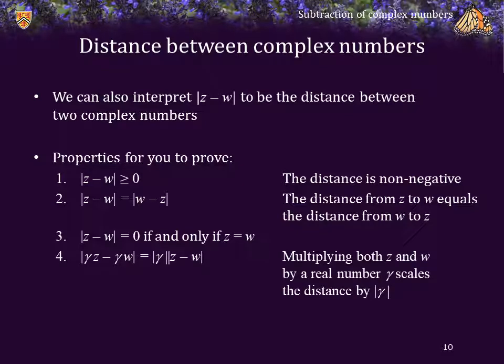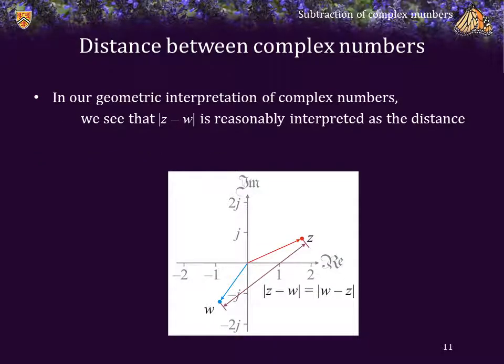And if we multiply both z and w by a real scalar γ, then this scales the distance by the absolute value of γ. In our geometric interpretation of complex numbers, we again see that the absolute value of z minus w is the distance shown, and that again is a reasonable interpretation of the distance between those two complex numbers.